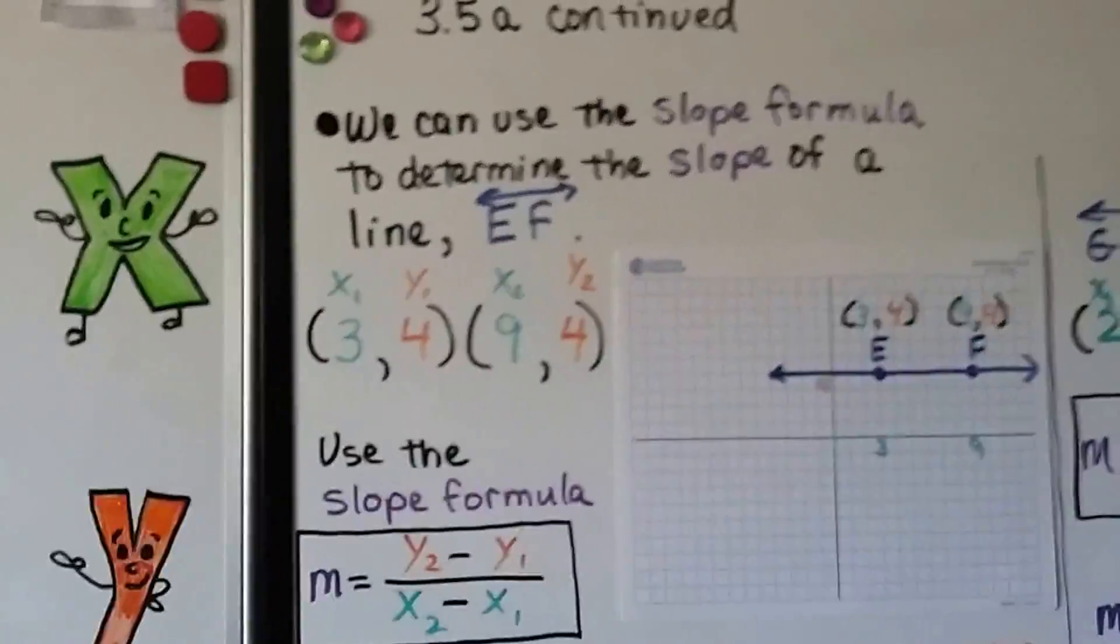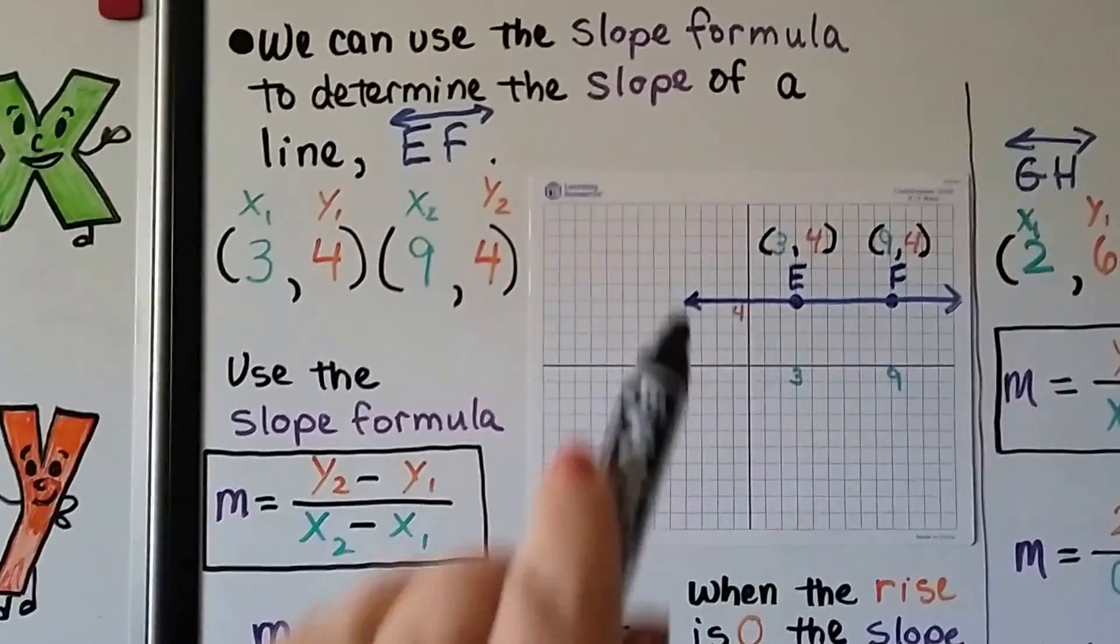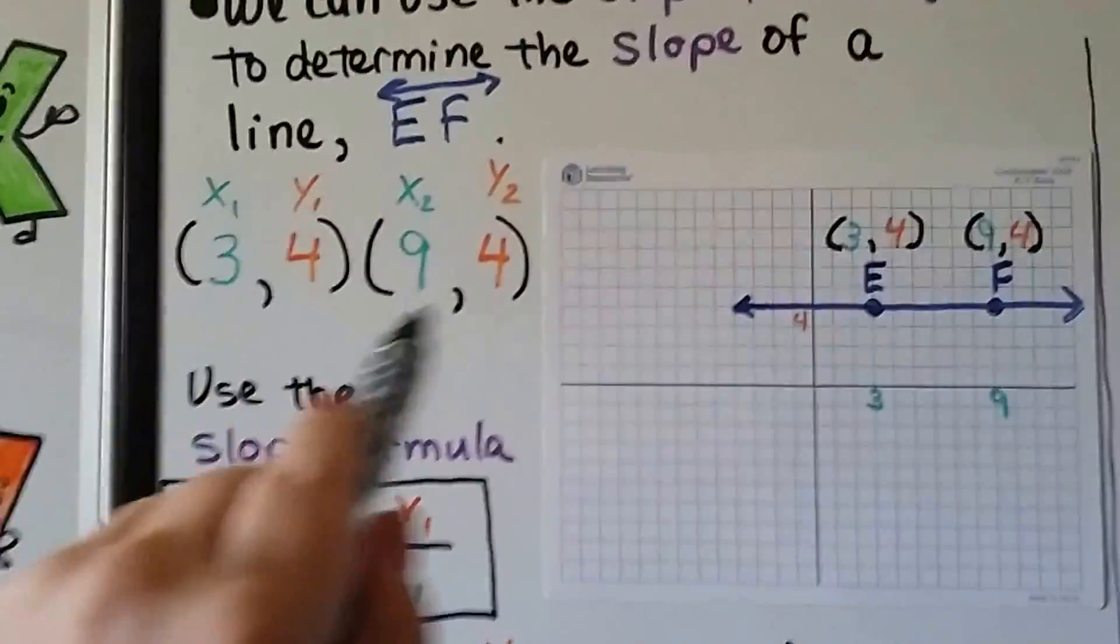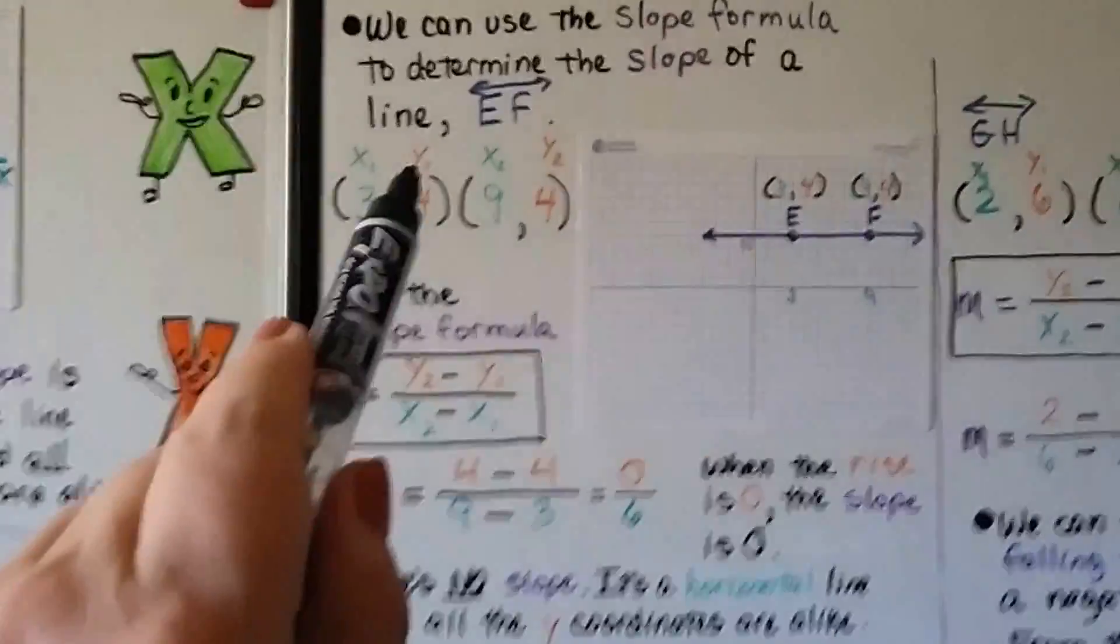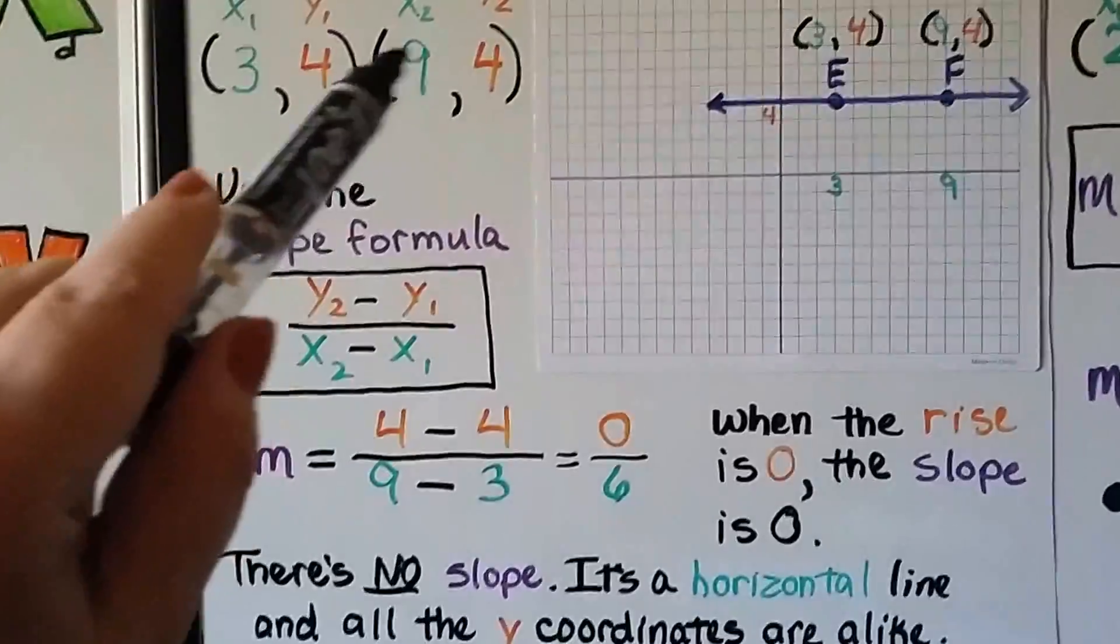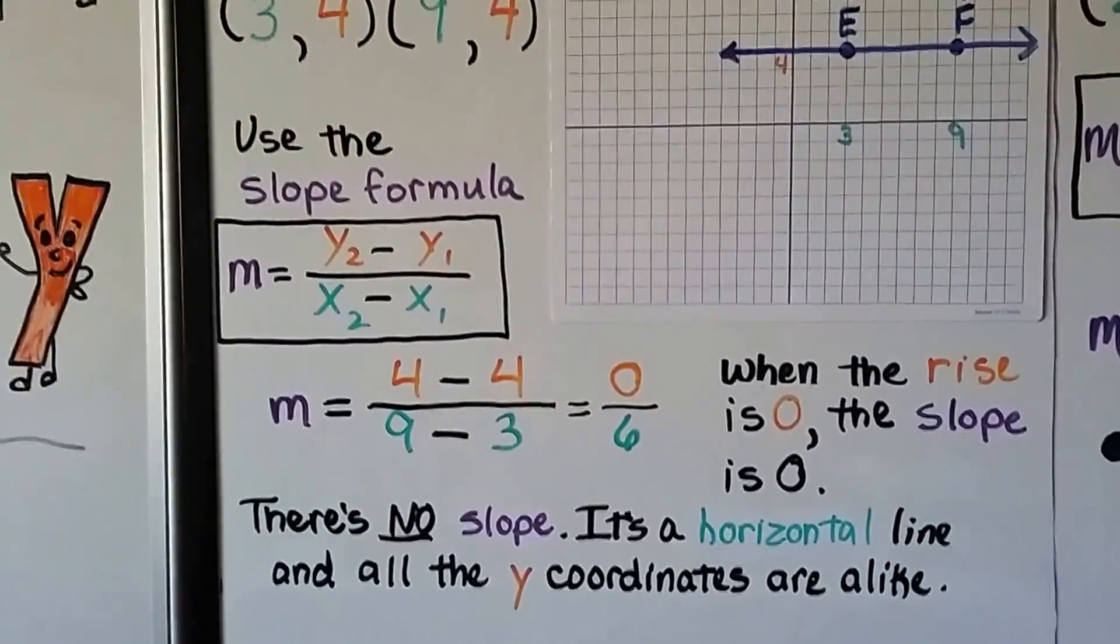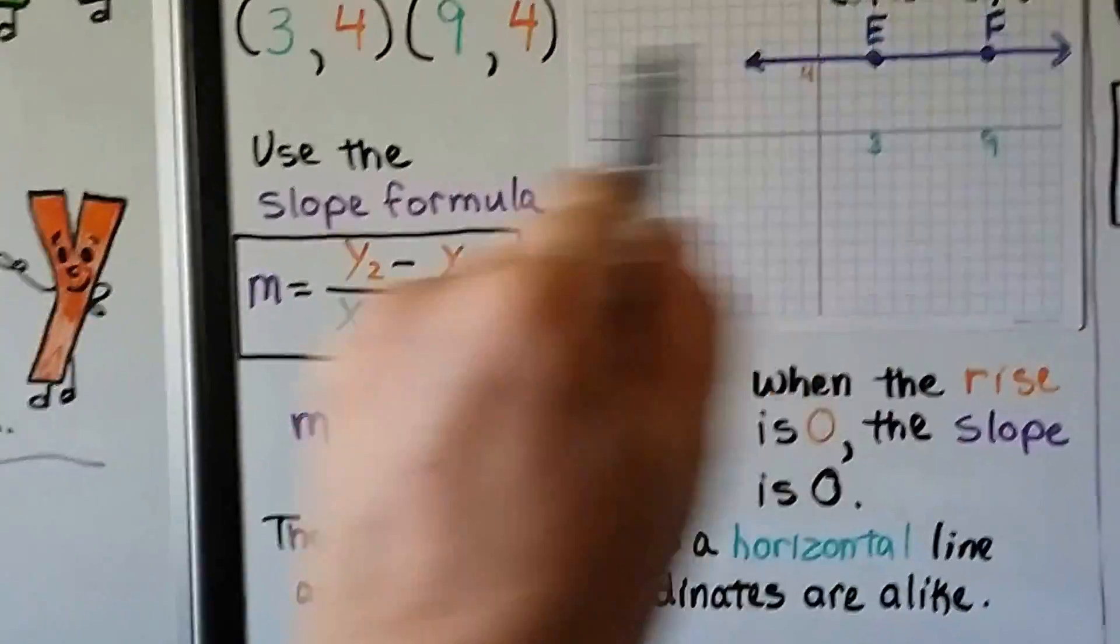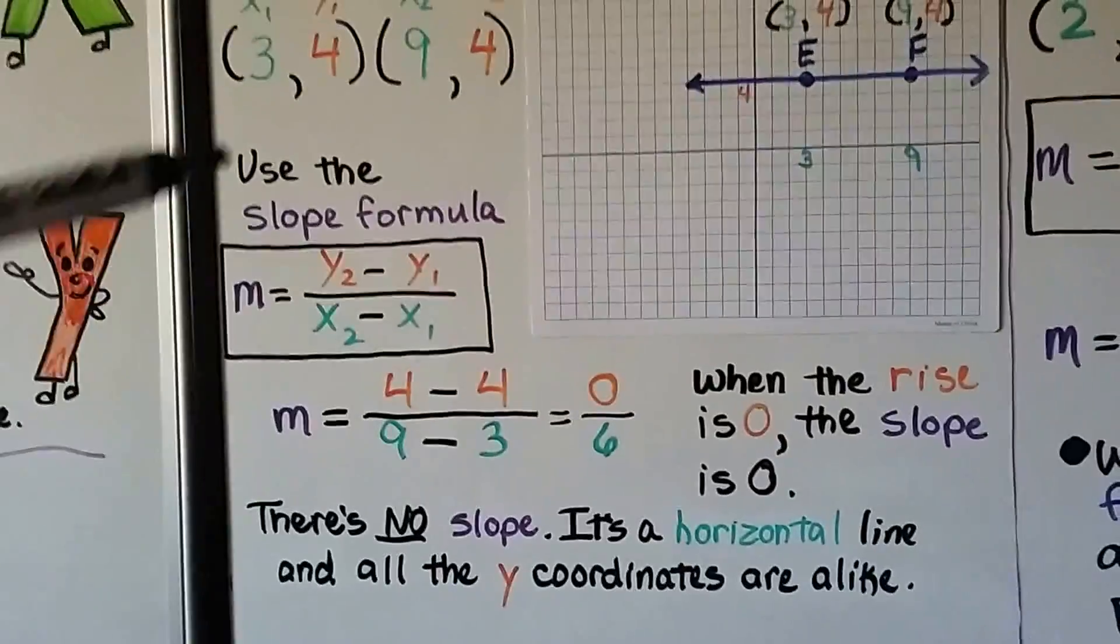We can use the slope formula to determine the slope of a line. We have EF and we have our x sub 1, y sub 1, x sub 2, y sub 2 values. And it's making a horizontal line. And if you look at the values for y, they're the same. When we had a vertical line, the x values were the same. Now we have a horizontal line and the y values are the same. And we use the slope formula and we substitute these into the formula. So we have a 4 minus 4 and a 9 minus 3. That gives us 0 over 6 for our rise over run. When the rise is 0 and the slope is 0, there's no slope here. It's like Nebraska, like flat land. It's not like the Rocky Mountains. There's no slope. It's a horizontal line and all the y coordinates are alike.